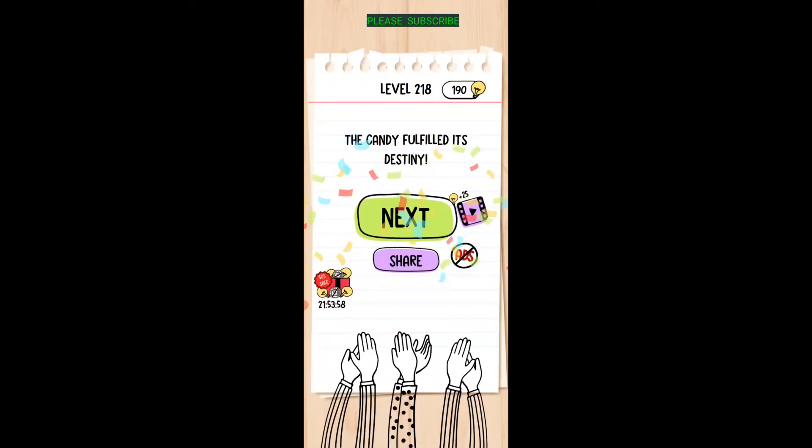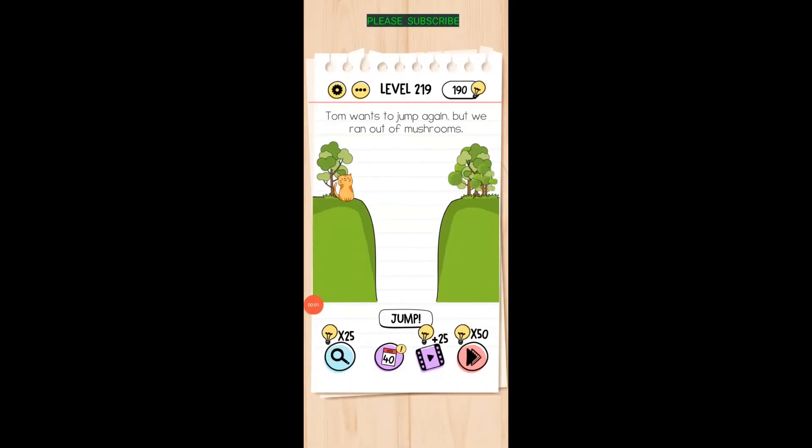Tom wants to jump again but we ran out of mushrooms. That's right, grab the thing and just drag it over and now you can jump. Drag it all the way over there, sorry about that.